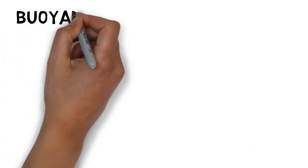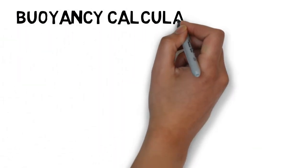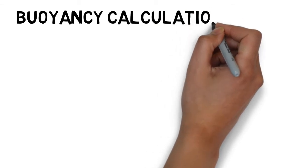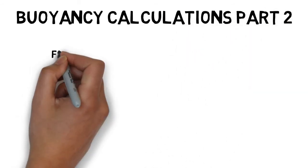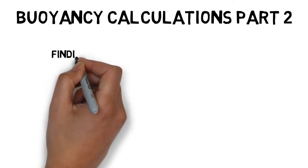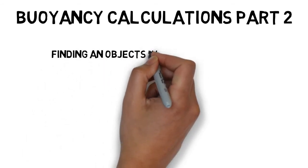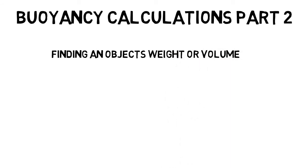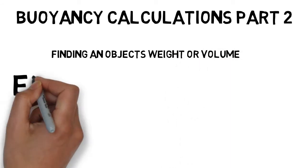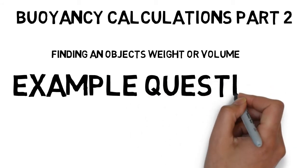We are on buoyancy calculations part two. More students get these questions wrong than any other, so it is worth using a methodical, calculated approach. We're looking at finding an object's weight or volume. This is example question three from my study notes.